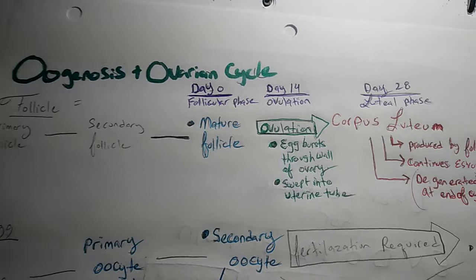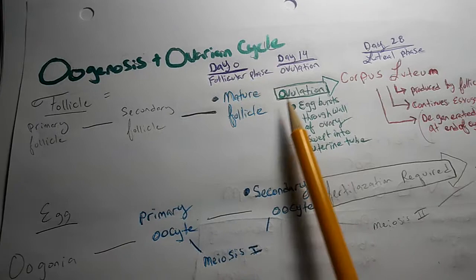We have the oogenesis and ovarian cycle. First off, we have the oogenesis, which is this way. And then we have the ovarian cycle, which goes this way.